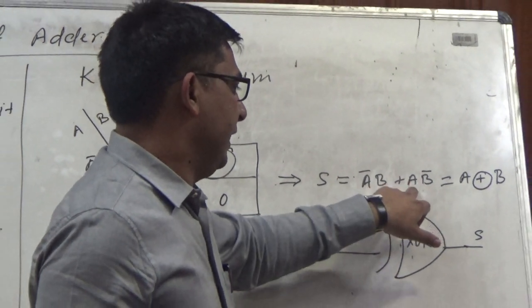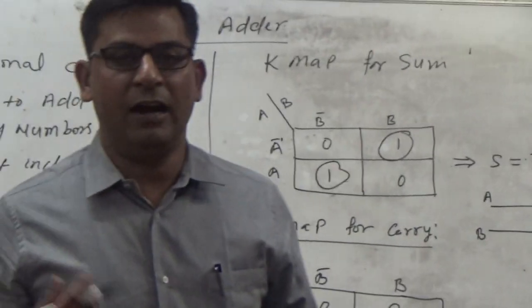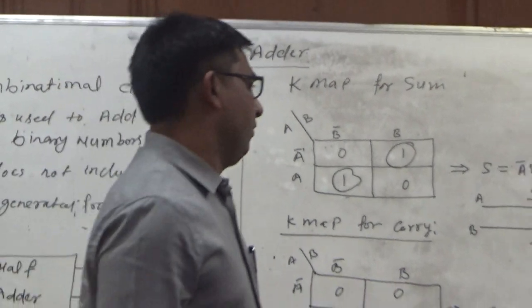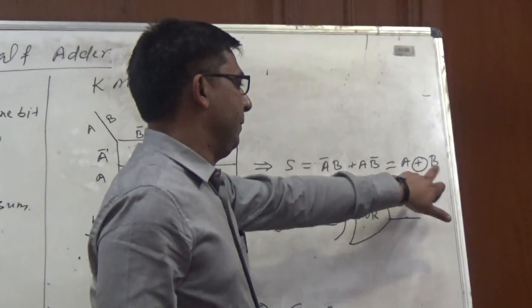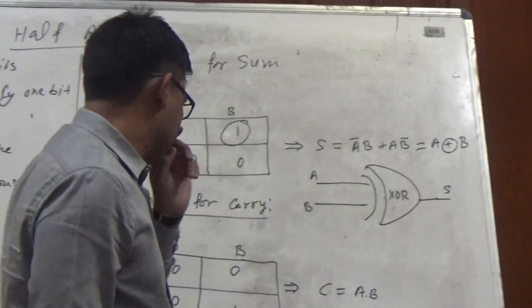A bar B plus A B bar is equal to the output of XOR gate. Or we can say we can write it as A XOR B. This is the symbol for XOR gate.